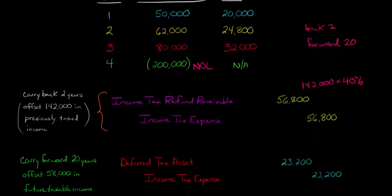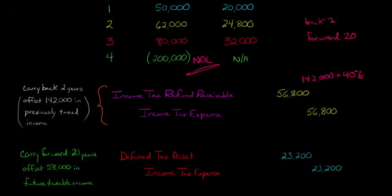Now you still have some of your net operating loss left over. You have a $200,000 loss, but you carried back $142,000 that you got the refund for, but that still leaves $58,000. You still have $58,000 here that you can now carry forward. You can mix it. I carried back $142,000, and I still have $58,000 of loss left over. I'm going to carry that forward. You can carry it forward up to 20 years.